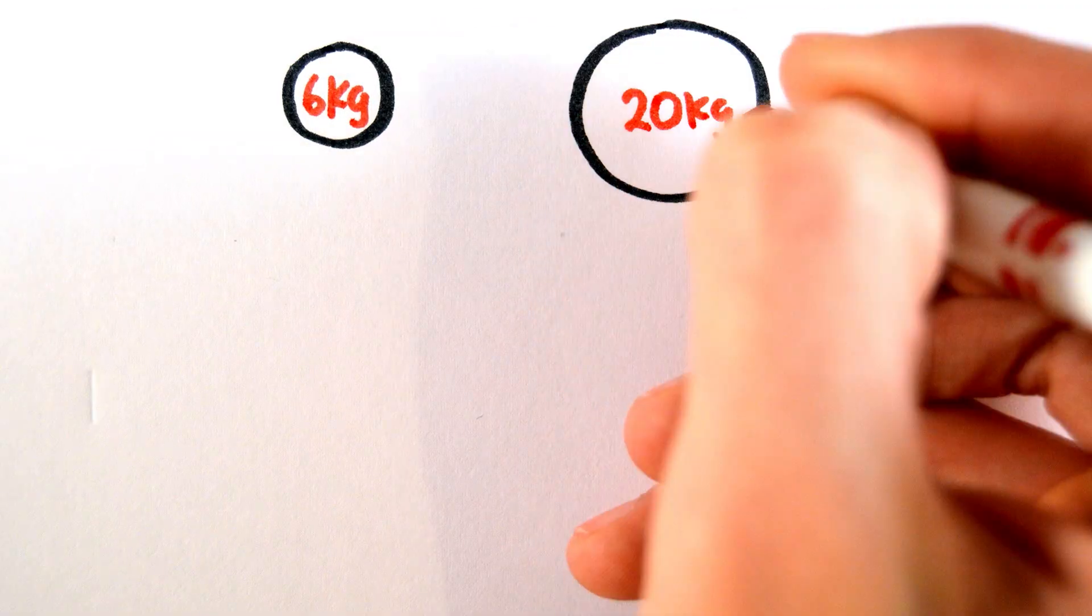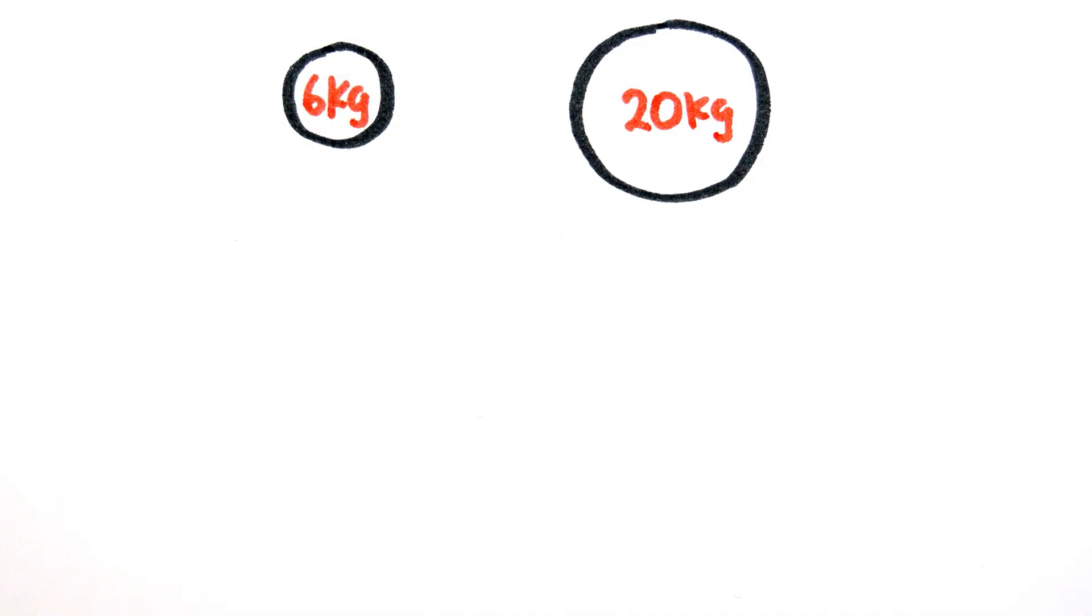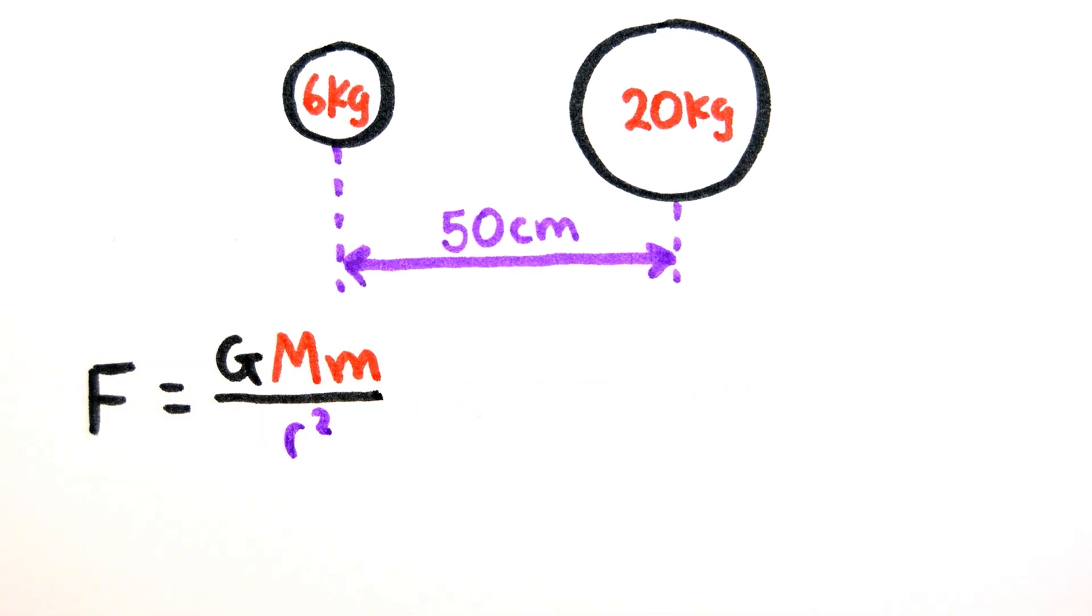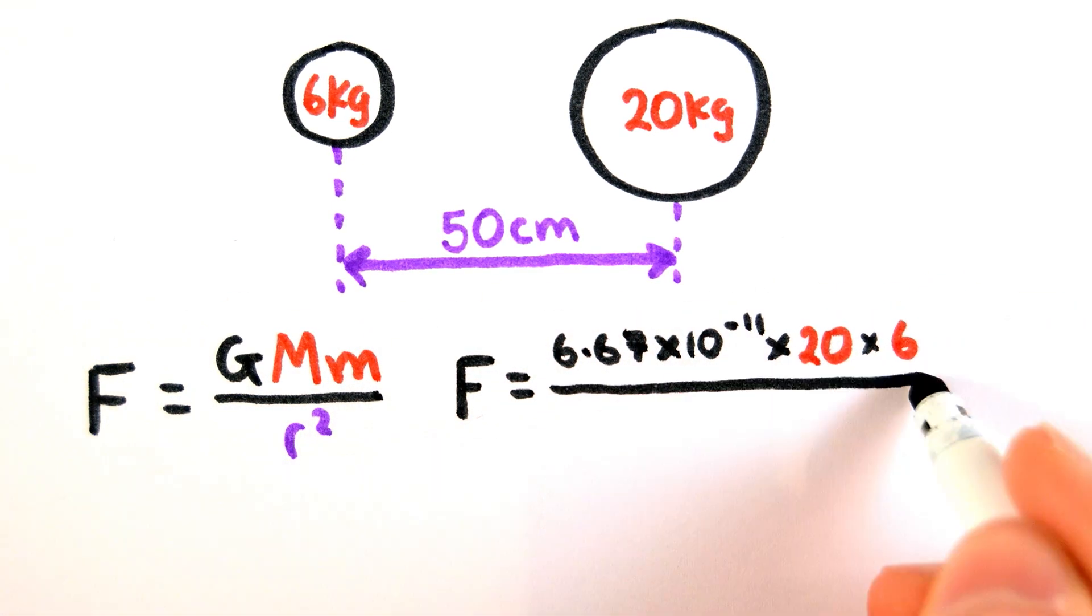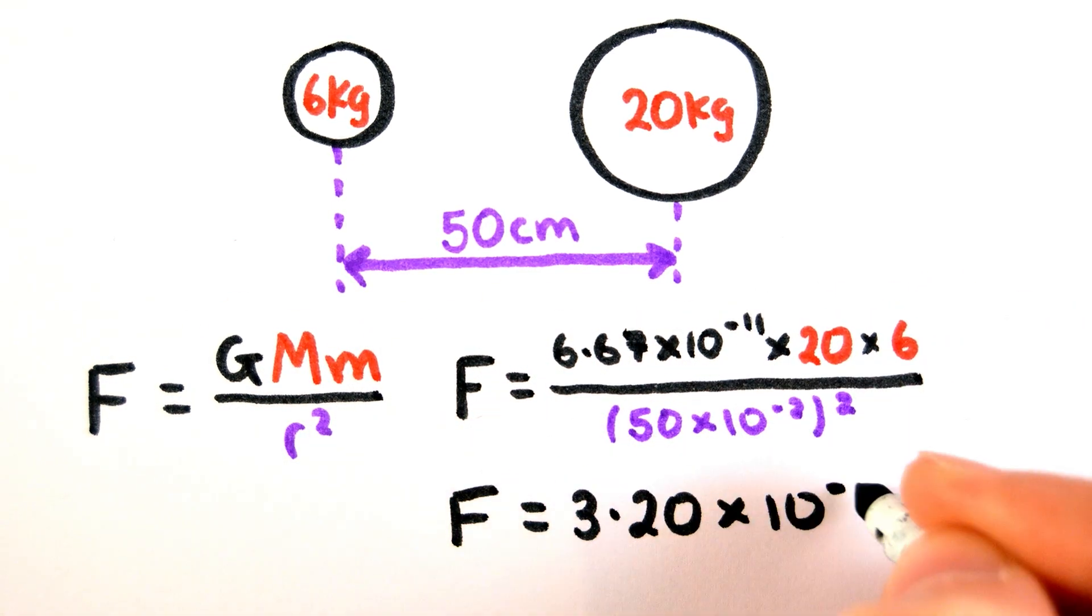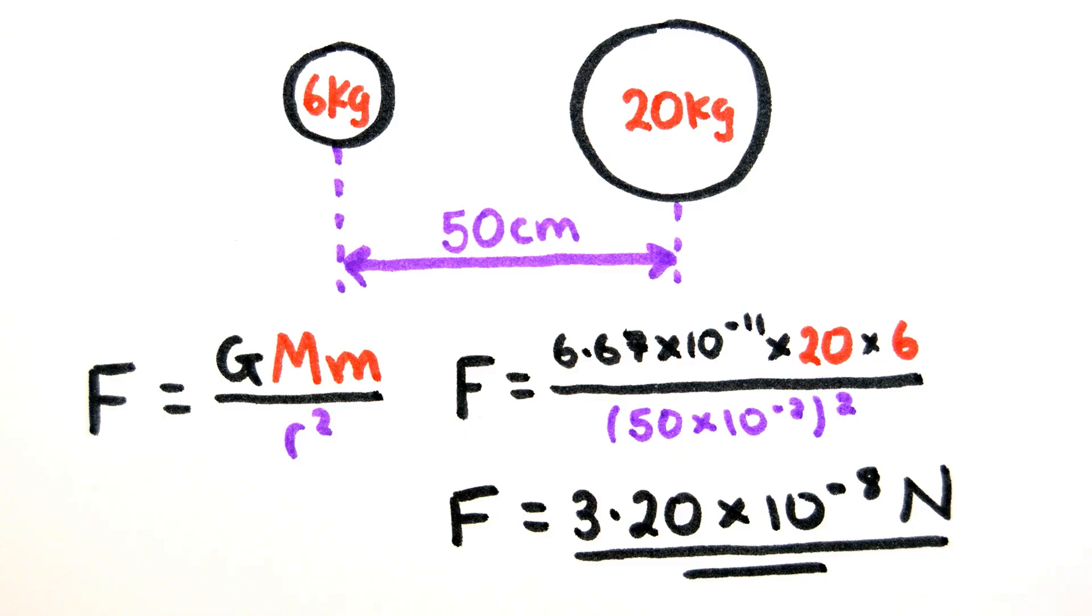For example, two bodies, one of mass 6 kilograms and the other of mass 20 kilograms, are placed 50 centimeters apart. From this we can work out that the gravitational force acting on each object is 3.20 times 10 to the minus 8 newtons. The force acting on each body is equal because they are attracted to each other.